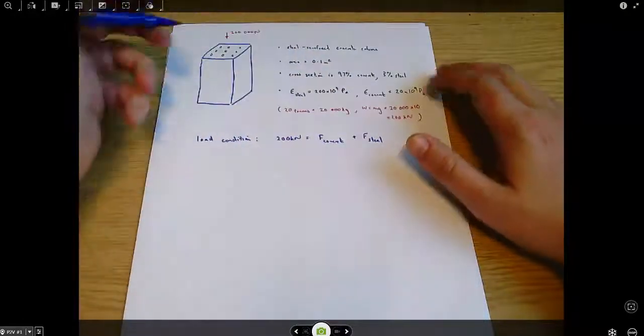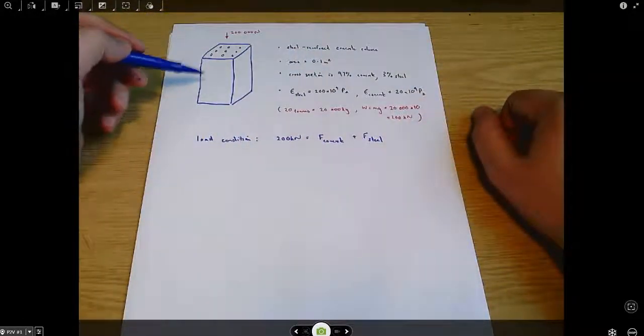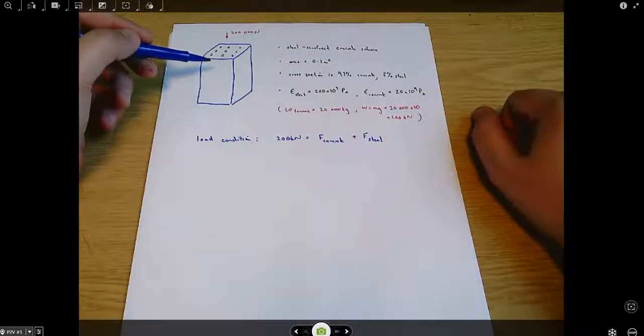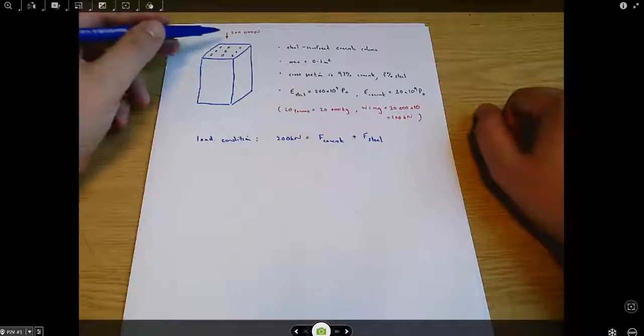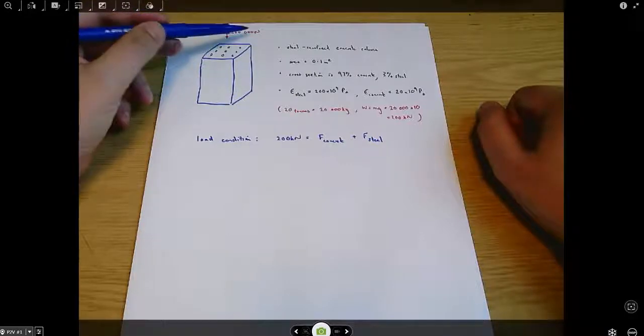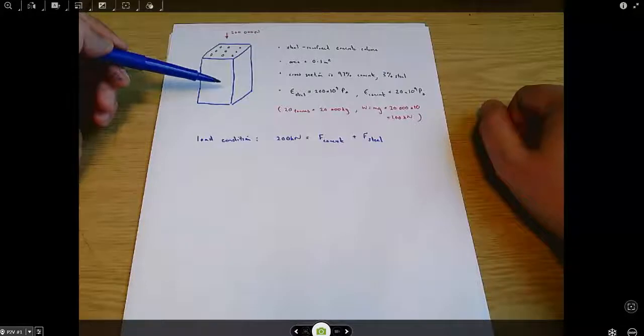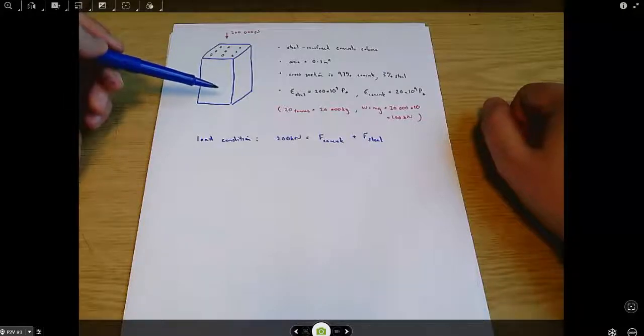In a way, that's a kind of method of sections argument or something like that, that we can see different parts of this have to be in equilibrium, and in particular, the force acting downwards has to be balanced by some forces acting upwards.